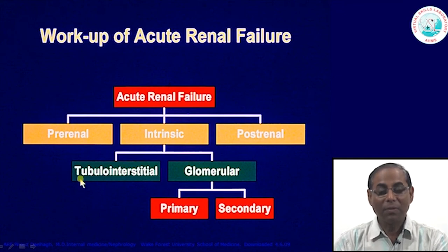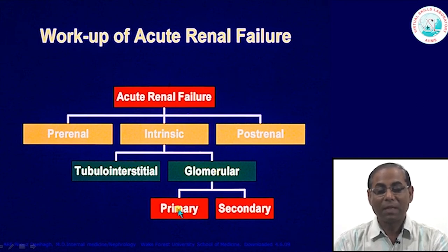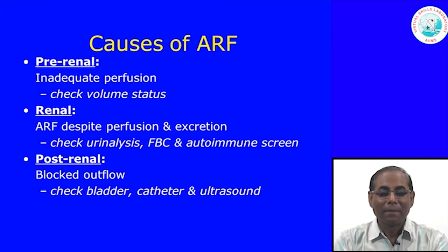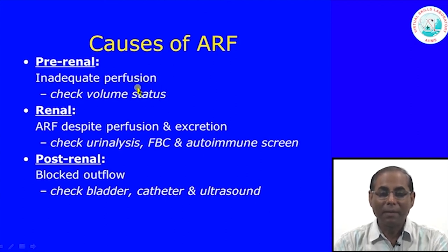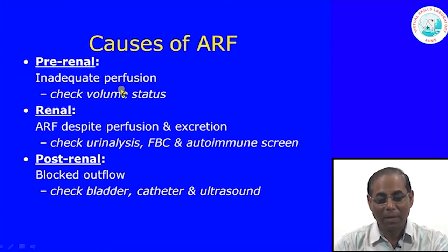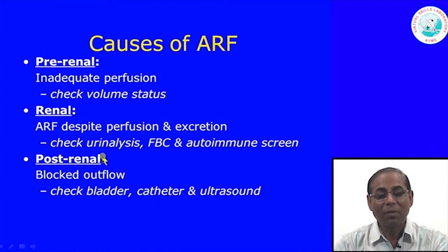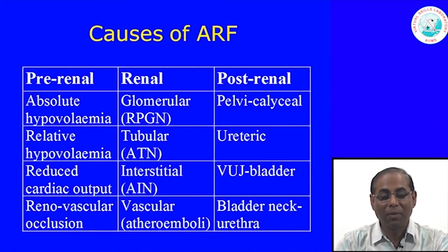If it is intrinsic, we determine whether it is a tubular or glomerular problem. If it is glomerular disease, we further classify it as primary or secondary, which we have already discussed in our classes on glomerulonephritis. Pre-renal involves inadequate perfusion due to severe injury, trauma, hemorrhage, or dehydration. Renal cause means acute renal failure despite perfusion and excretion being fine — there is a renal disease causing the failure. Post-renal involves the lower renal tract.